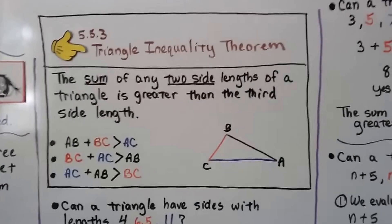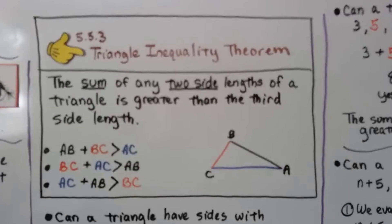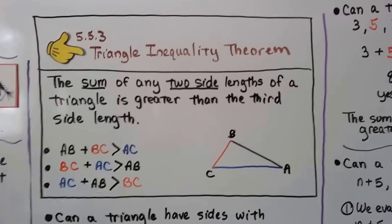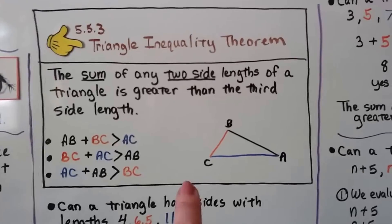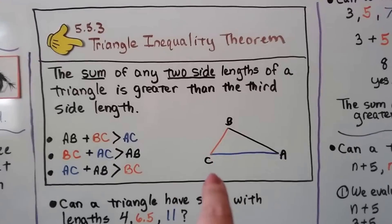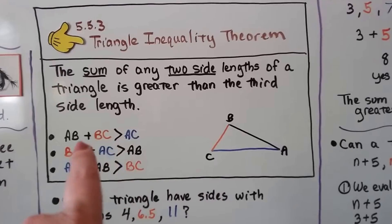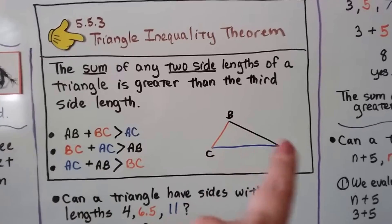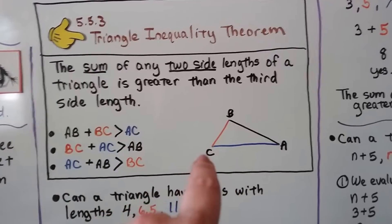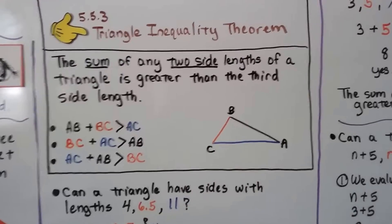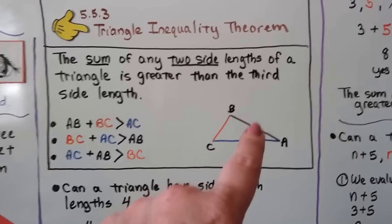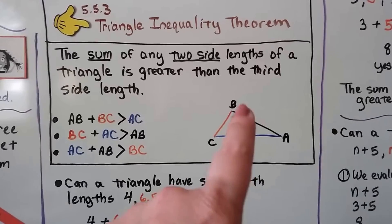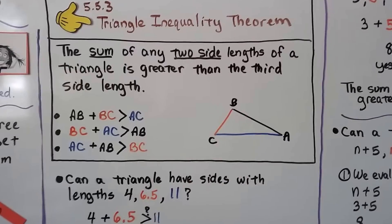It's the triangle inequality theorem, and it says the sum of any two side lengths of a triangle is greater than the third side length. So we've got this triangle ABC. If we add AB and BC, it'll be greater than AC. If we add the blue one to the orange one, that'll be greater than the black one. And if we add the blue one and the black one, that's greater than the orange one.